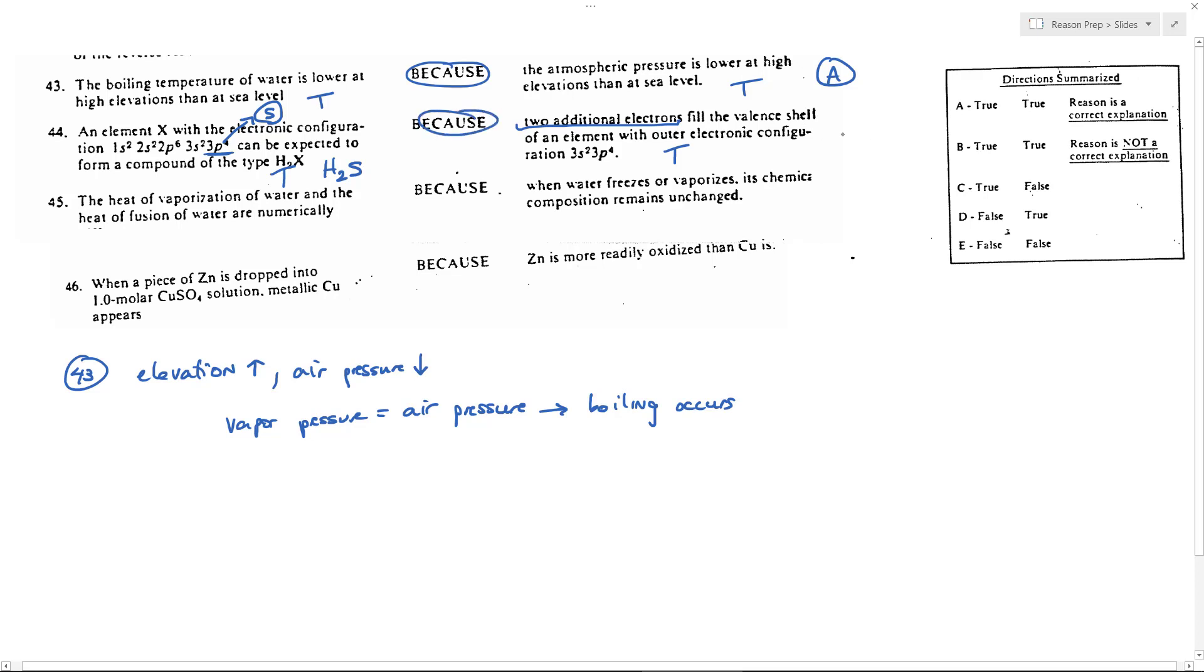You get those two additional electrons filling that valence shell, so this would be true - true and true - and then this is a CE. This explains it, so yet again we get choice A. The heat of vaporization of water and the heat of fusion of water are numerically different. This is true.